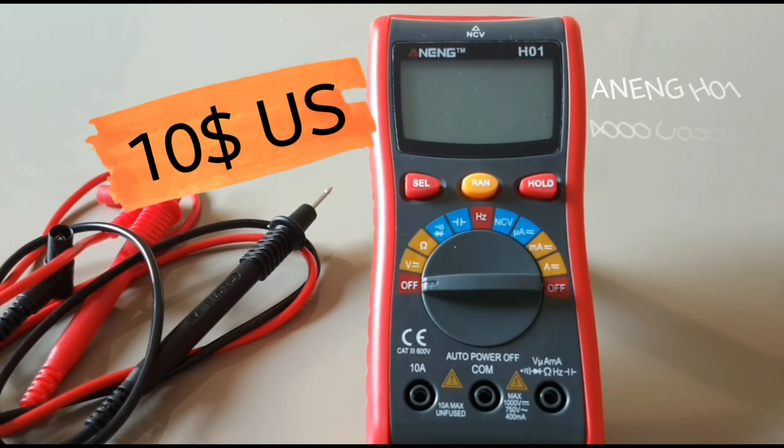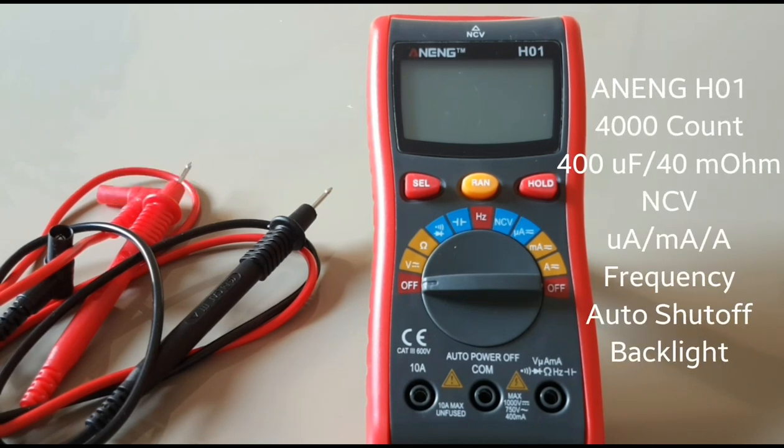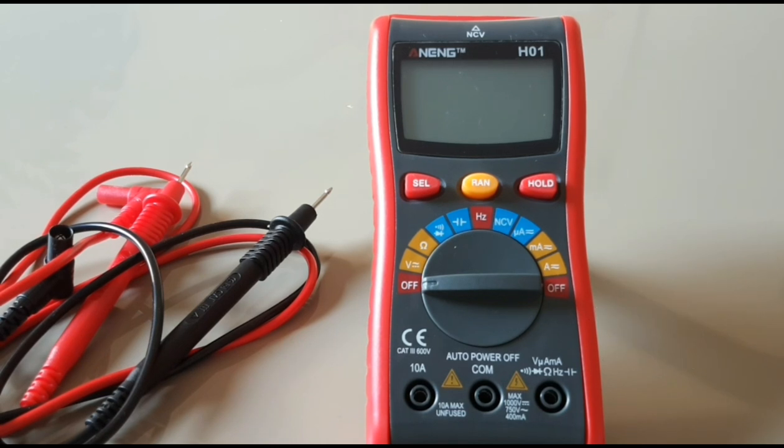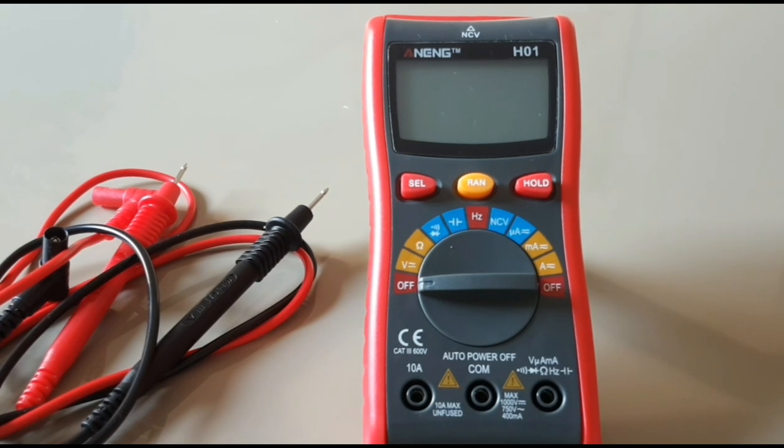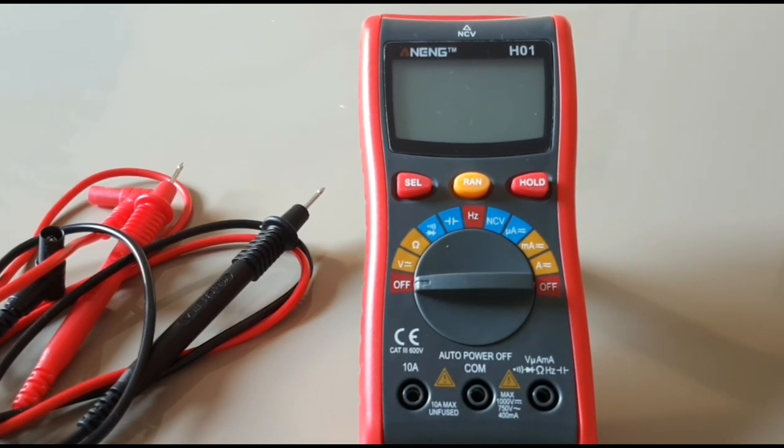Hi everyone, welcome back to another cheap old multimeter review. Today in the hot seat we've got the Anang H01, a cheap multimeter from China that goes for around ten to twelve dollars US, around fifteen to sixteen Canadian.